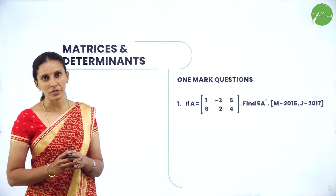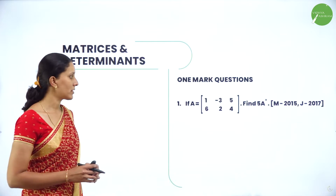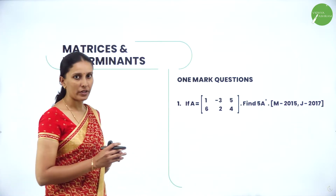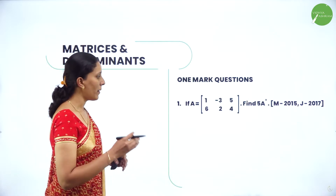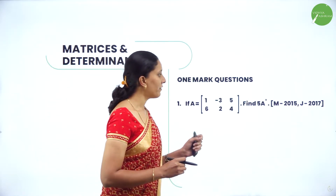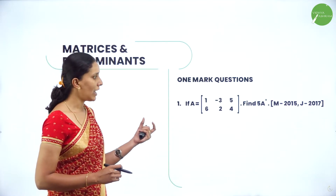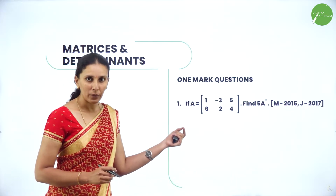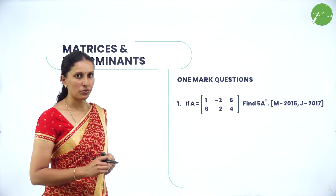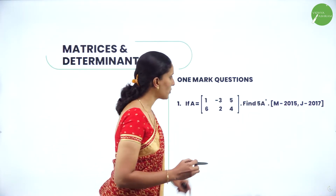I have taken a few one-mark questions to solve, and later we will solve two-marks, three-marks, and six-marks. If A equals the matrix [1, -3, 5; 6, 2, 4], find 5A'. We need to find the scalar value 5 multiplied with matrix A's transpose. Let's find A' first.